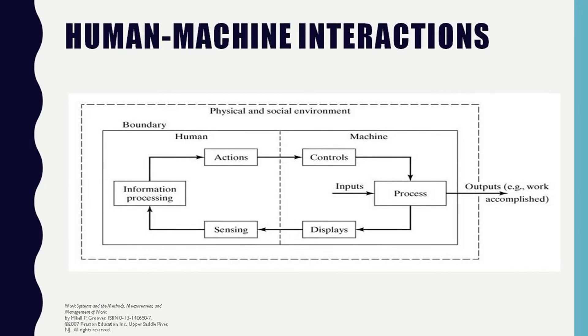A key feature of a human-machine system is that interaction occurs between human and machine, as depicted in the block diagram model. This system has a boundary that defines which components are included within the scope of the system for analysis and design.